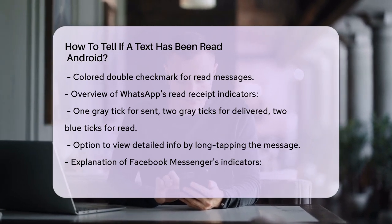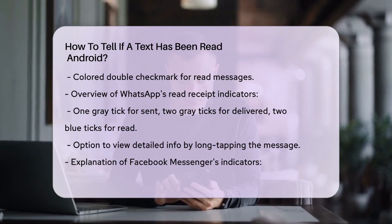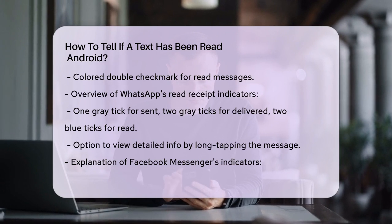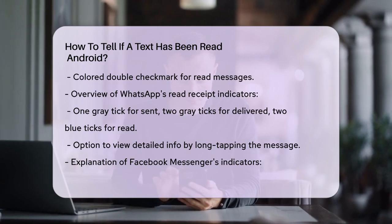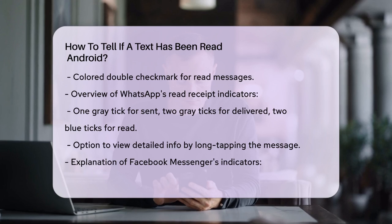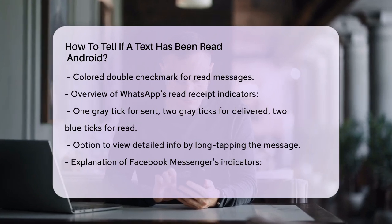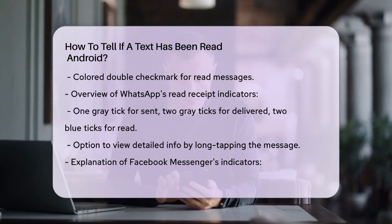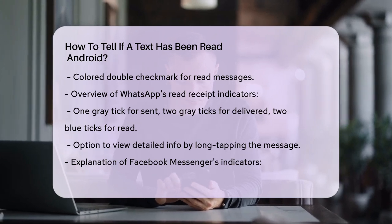For Facebook Messenger, an empty circle with a blue check mark indicates a sent message, a filled circle means it's been delivered, and when the recipient reads it, you'll see their profile picture instead of the filled circle.